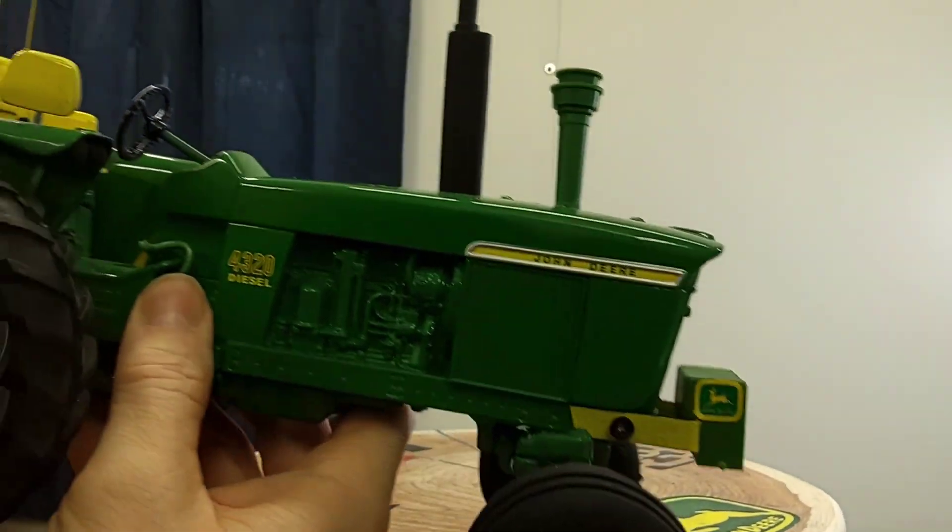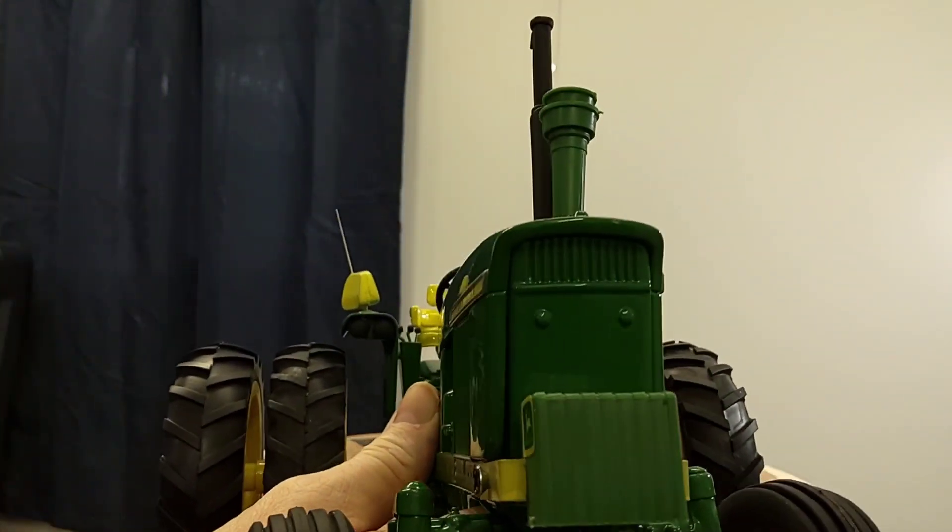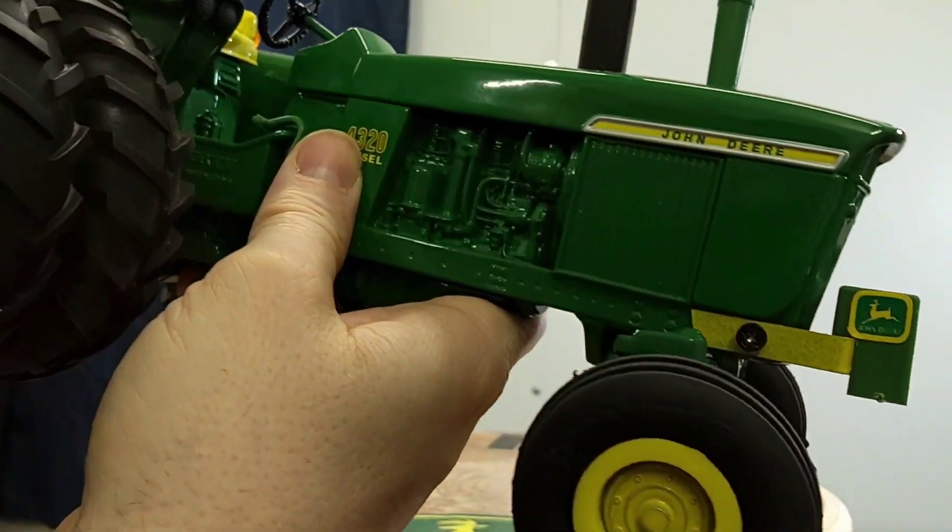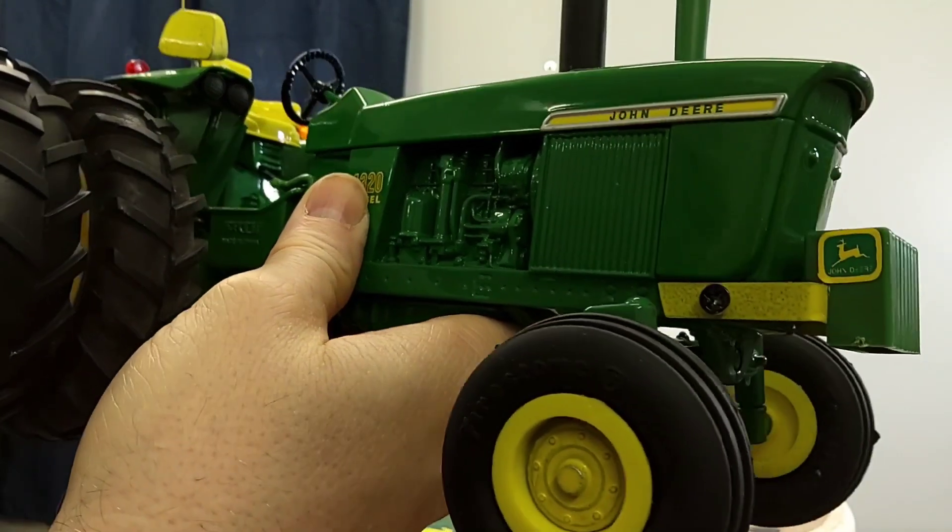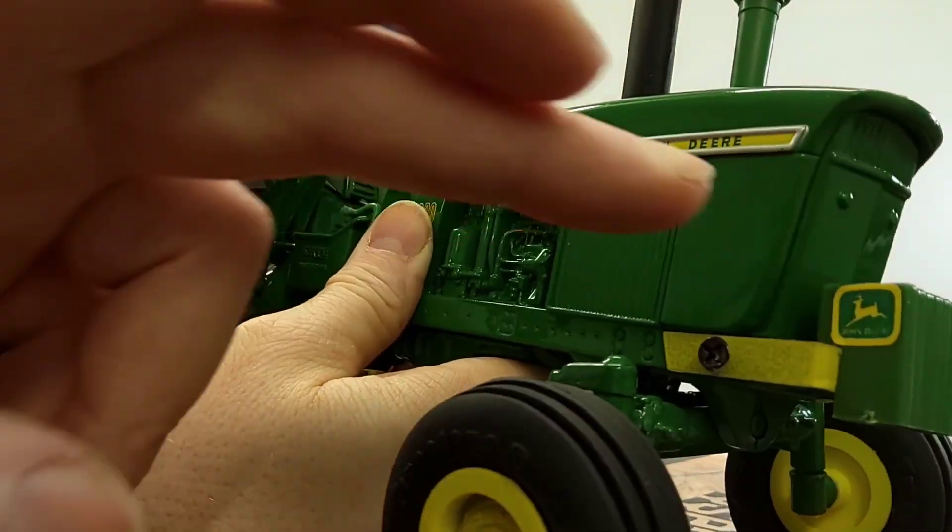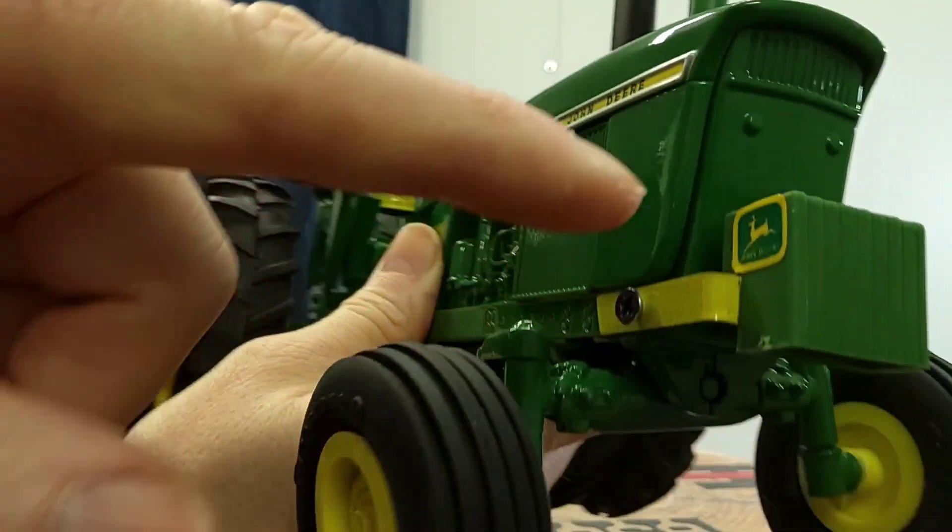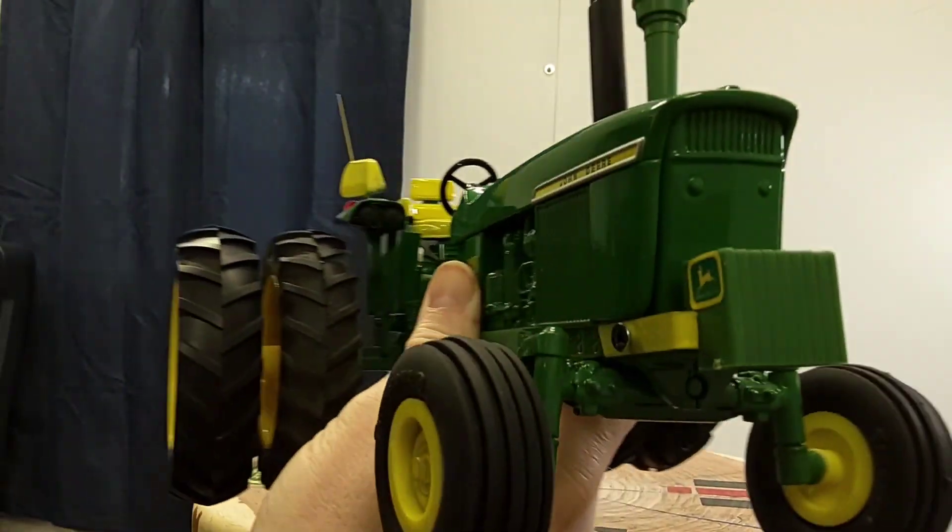There's your front grill. Of course, I did add the weight bar and the weights, those are from Dakota. All these parts pretty much are from Dakota Toys. Painted the weight bar the John Deere yellow, put a little John Deere decal on either side of the weights.